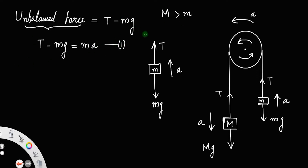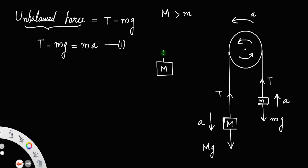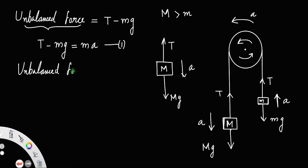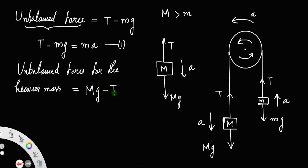Similarly, let us take the free body diagram of the heavier mass M. Here we have tension T in the upward direction, weight Mg in the downward direction, and acceleration A downward since the mass is moving downward. The unbalanced force for the heavier mass is Mg minus T, since Mg is greater than T. According to Newton's law, the unbalanced force equals mass times acceleration: Mg minus T equals MA. Call that equation number 2.